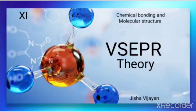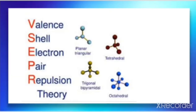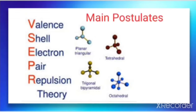Hello students. As we learned about the Lewis concept, the Lewis concept is unable to explain the shape of molecules. It only gives an idea of how many bond pairs and lone pairs are there, but it does not give an idea about the shape of the molecule. So this theory, that is VSEPR theory, provides a simple procedure to predict the shape of covalent molecules. VSEPR stands for Valence Shell Electron Pair Repulsion theory. Let us go into the main postulates and discuss them one by one with examples.